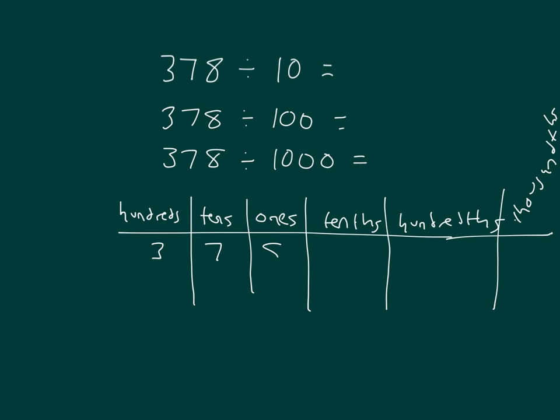Our first number is 378. When we divide by 10, our number gets smaller. The ones would become tenths. The tens become ones, and the hundreds become tens. So our number is 37 and eight tenths.